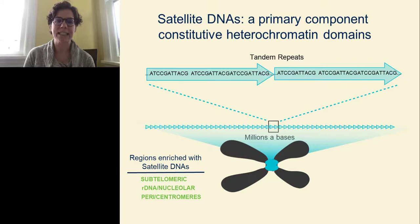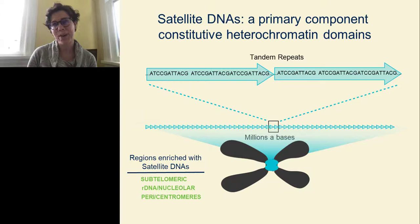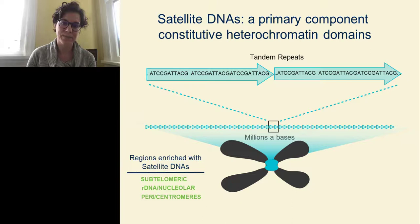For those of you who aren't familiar with satellite DNAs, satellite DNAs are a type of tandem repeat — a type of sequence where you have a stretch of A's, T's, C's, and G's in a head-to-tail orientation. Unlike the tandem repeats found throughout the human genome, the ones I'll focus on today are found in a head-to-tail orientation for millions of bases. These huge areas of tandem repeats are typically found enriched around the subtelomere, the rDNA, and the pericentromeric and centromeric regions, which will be the focus of my talk.